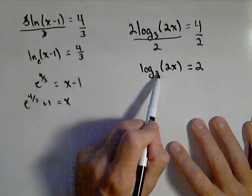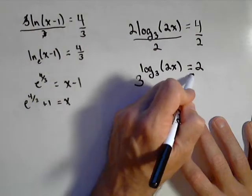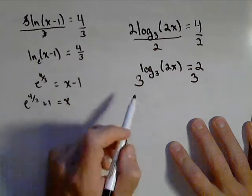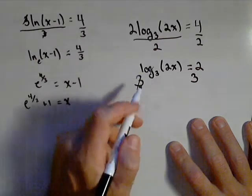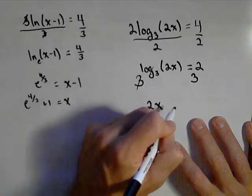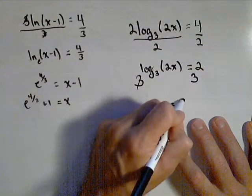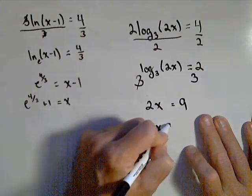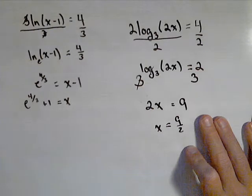Now I'm going to rewrite it with a base of 3. Or if we want to use that other property, I'm going to make both sides exponents of 3. Essentially those cancel, and I get 2x equals 3^2, or 9. So x equals 9/2.